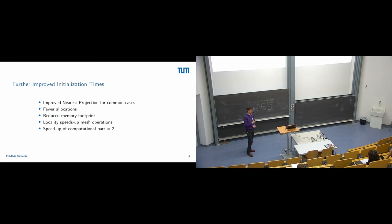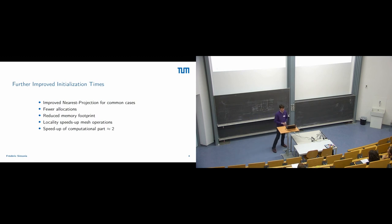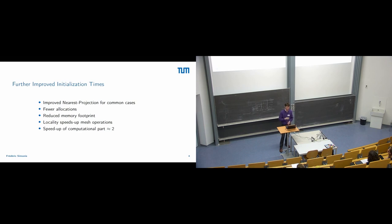Another big step forward is our continuous path towards faster initialization. This is always the biggest part of preCICE where we burn a lot of resources and have the most problems. Especially in the case of nearest projection mappings, we have to shift around a lot of mesh information. By getting rid of some older baggage, we were able to completely refactor these mesh classes, resulting in dramatically fewer allocations, a reduced memory footprint, and a speed-up of the computational parts of about two.